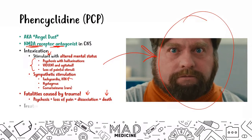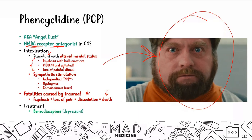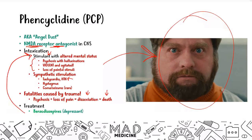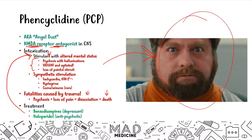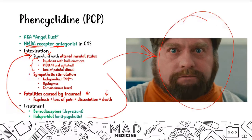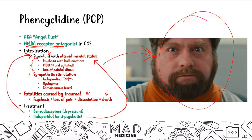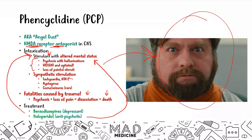Treatment for PCP uses a two-pronged approach. First, benzodiazepines — a CNS depressant — to address the stimulant capabilities. Second, haloperidol, an antipsychotic, to address the altered mental status. Using these two drugs together, you can slowly wean someone off PCP, assuming they haven't harmed themselves or others during intoxication.